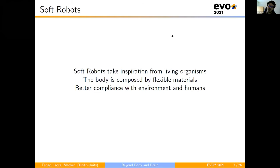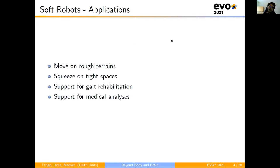So, starting with a rapid overview about soft robots. Soft robots take inspiration from living organisms, and present a body composed of flexible materials that allow better compliance with the environment and humans. Soft robots are able to move on rough terrains and to squeeze in tight spaces, and for this reason they have been proposed for gait rehabilitation and medical analysis.